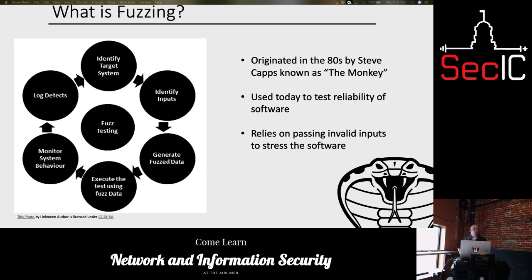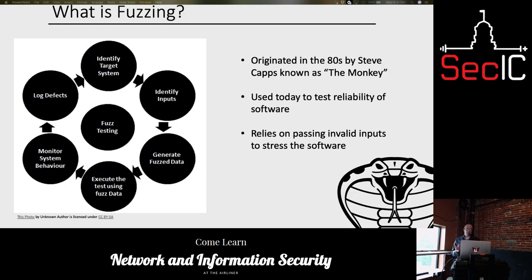He made this as a kind of coverage test, perhaps — it just wasn't called that back then. Today fuzzing is mostly used to test the reliability of software. The biggest thing with fuzzing is that it relies on invalid inputs to stress the software to determine how it handles those invalid inputs.